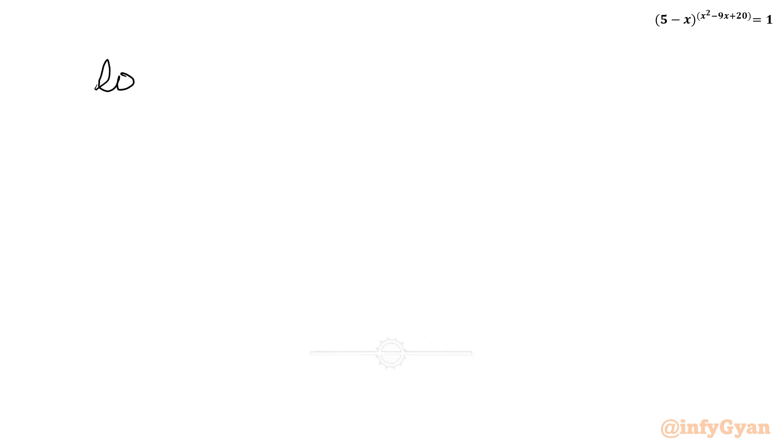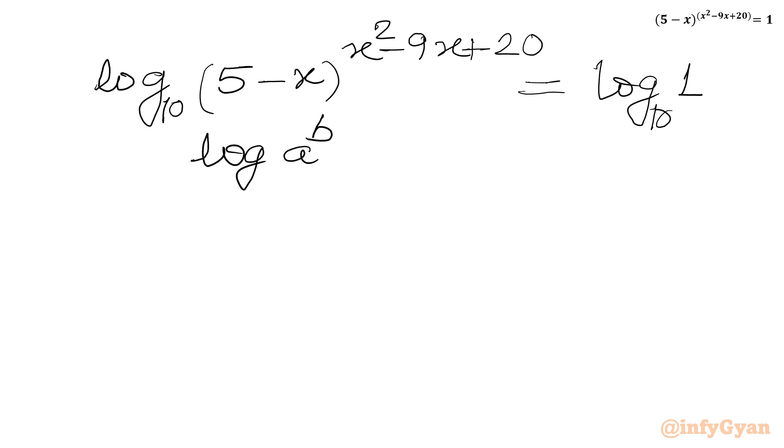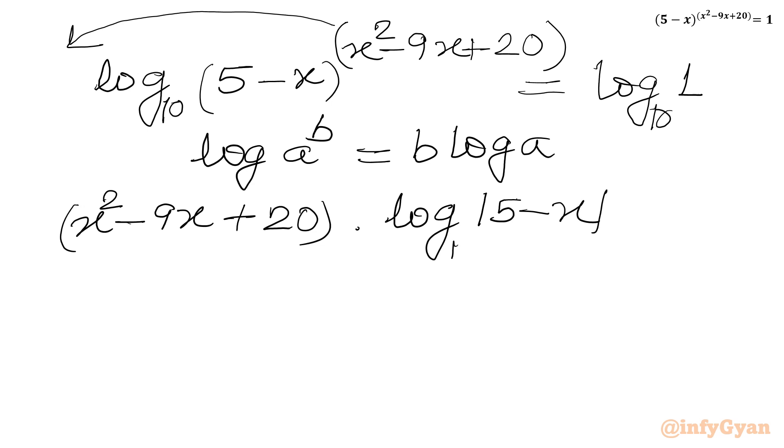I will consider log both sides. So I will write log with base 10 of 5 minus x with power x square minus 9x plus 20 equal to log 1 with base 10. Now I will write one log property: log a power b equal to b log a. So this power will come out as a multiplier. So I can write x square minus 9x plus 20 times log mod of 5 minus x with base 10, and RHS will be 0 as we know log 1 is 0. So from here we can conclude two equations.